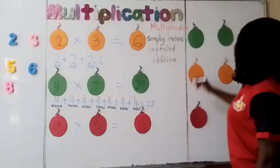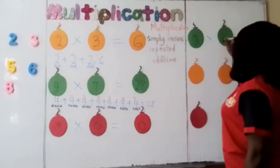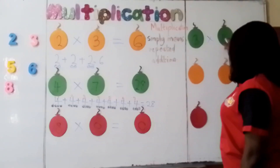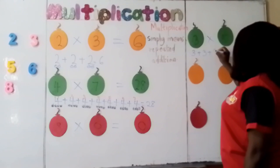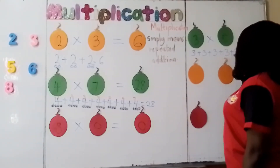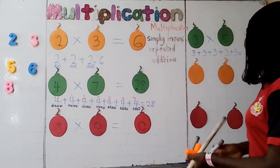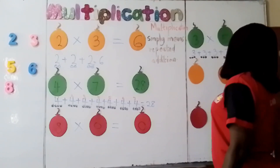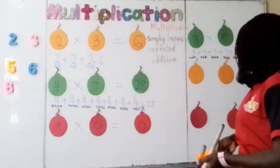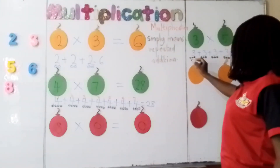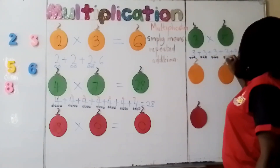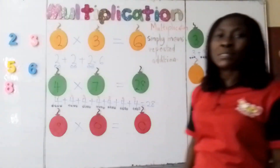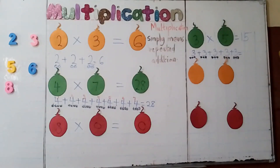Now let me give you one to do: 3 times 5. That is 3 in 5 places — 1, 2, 3, 4, 5. So 3 in 5 places: 1, 2, 3 — 1, 2, 3 — 1, 2, 3 — 1, 2, 3 — 1, 2, 3. Now add it together: 1, 2, 3, 4, 5, 6, 7, 8, 9, 10, 11, 12, 13, 14, 15. That means 3 times 5 is 15.